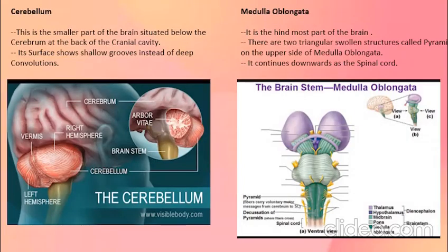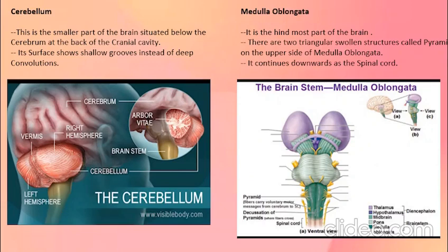The cerebellum is the smaller part of the brain situated below the cerebrum at the back of the cranial cavity. Its surface shows shallow grooves instead of deep convolutions. The medulla oblongata is the hindmost part of the brain and has two triangular swollen structures called pyramids on its upper side. The medulla oblongata continues downwards as the spinal cord.